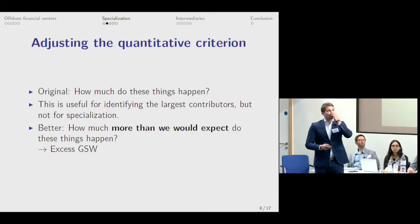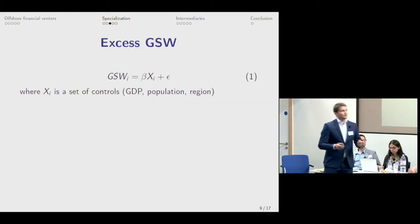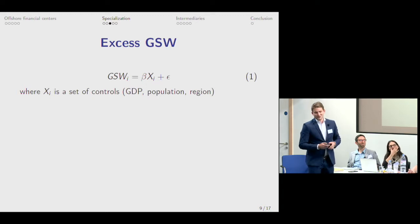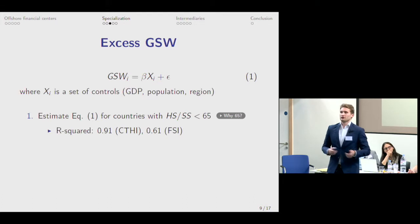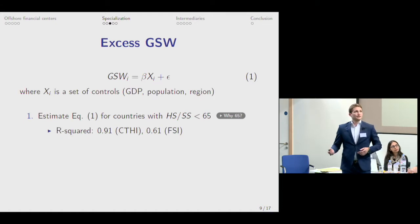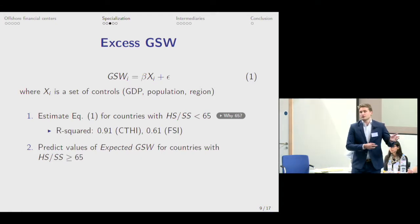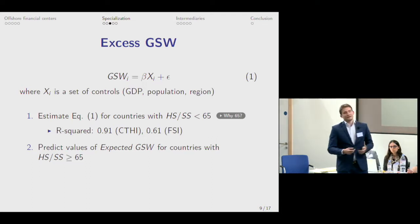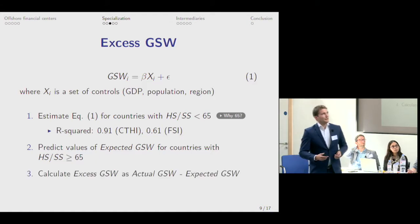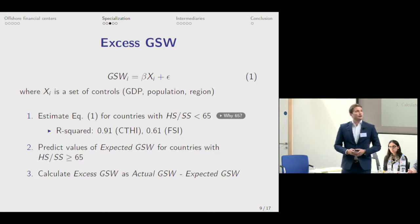What we do in this paper to accommodate our need for finding how OFCs specialize is to adjust the quantitative criterion. The original question of the quantitative criterion is how much do these things happen, which is useful for identifying how much each tax haven contributes to the problem, but not so much for how much they specialize. For that, we need to relate it to the size of the jurisdiction. The United States will have more foreign direct investment than Bermuda, but that does not mean the US specializes more in being a tax haven. So we ask a better question: how much more than we would expect do these things happen? To do that, we calculate the so-called excess global scale weight — the difference between the actual global scale weight measured in the data and the expected one estimated from a regression on non-tax haven countries.